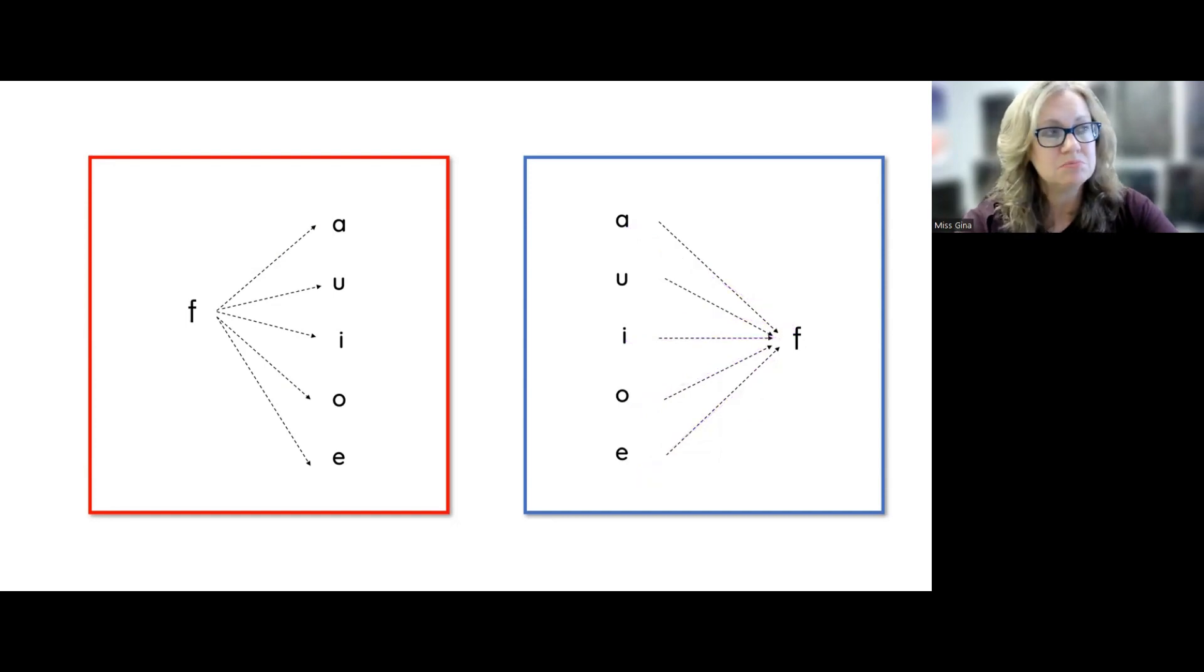We're going to go faster. Don't get worried that we're going to race. We're not going to race right now. Ready? In the blue box, starting with AF. AF, AF, IF, OFF, F. All right.